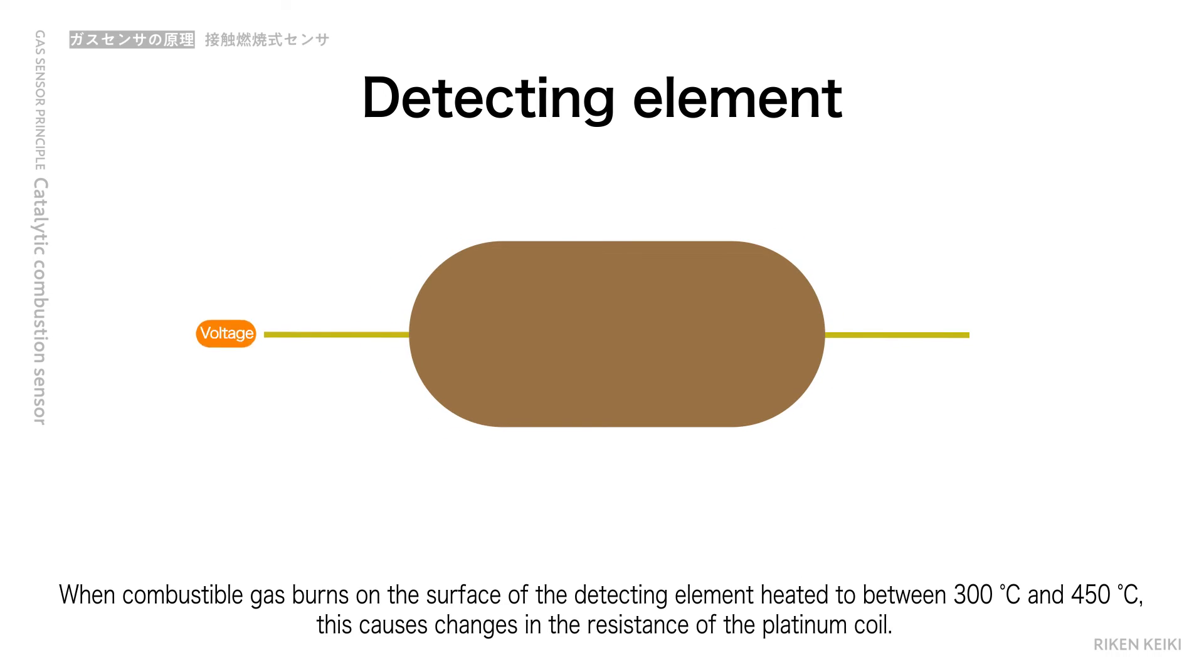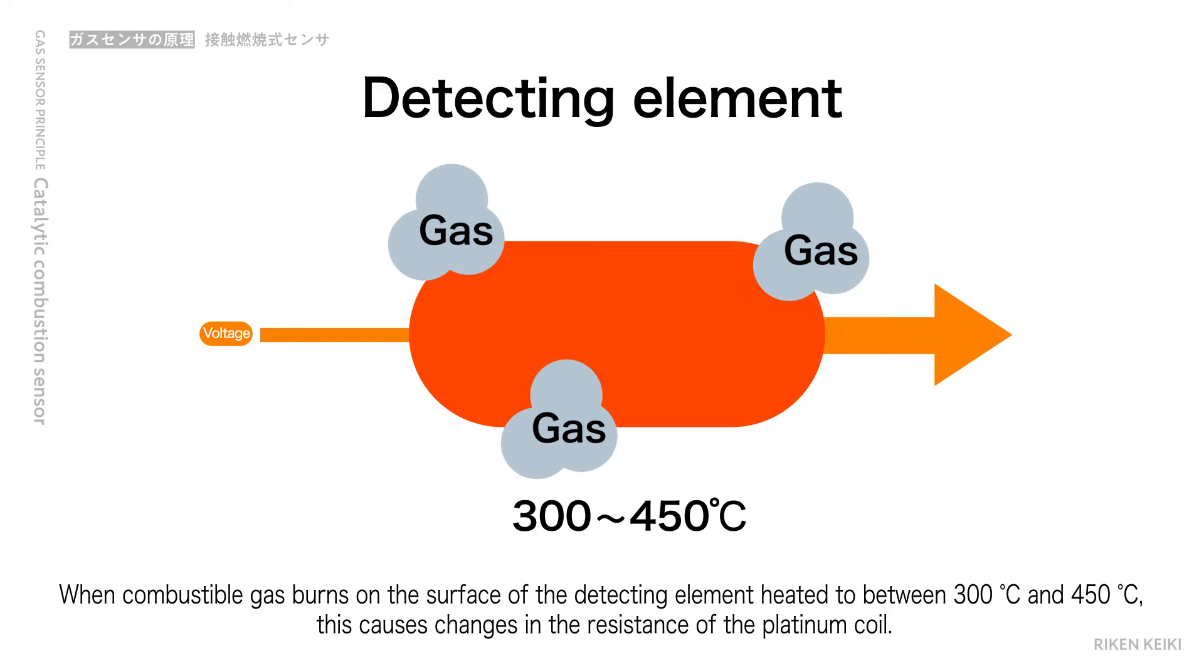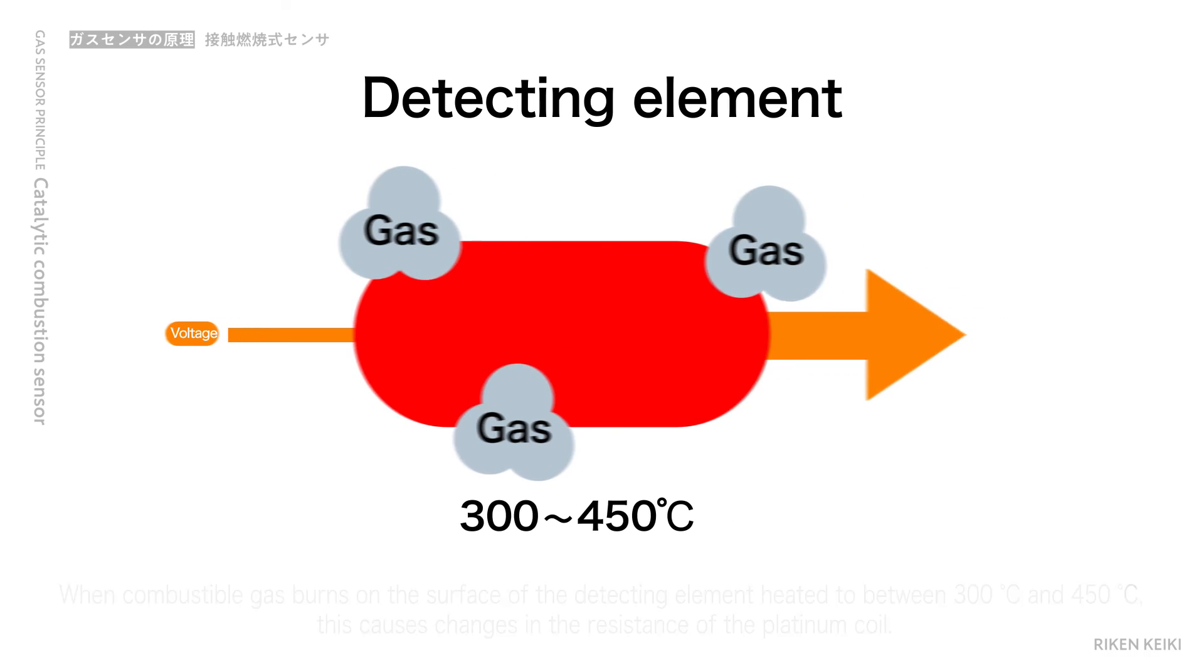When combustible gas burns on the surface of the detecting element, heated to between 300 degrees and 450 degrees, this causes changes in the resistance of the platinum coil.